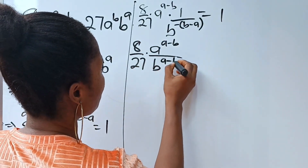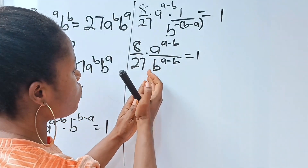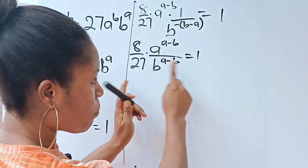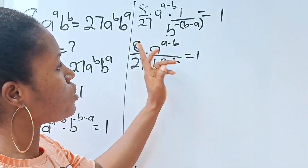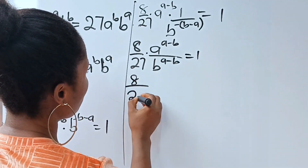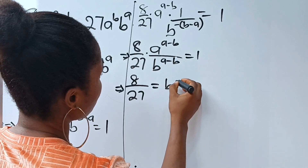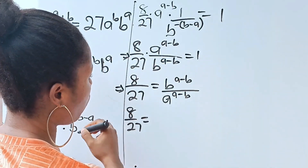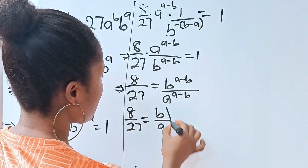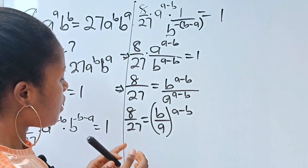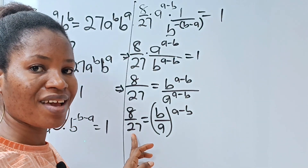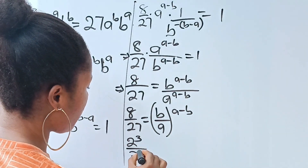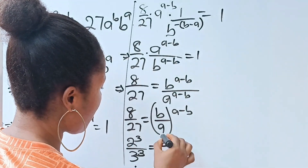So this becomes b to the power of a minus b as well, equal to 1. Now I want to move this to the other side, so I multiply both sides by b to the power of a minus b over a to the power of a minus b. So 8 over 27 equals b raised to the power of a minus b divided by a raised to the power of a minus b. Since they share the same power, we can write this as b over a raised to the power of a minus b.